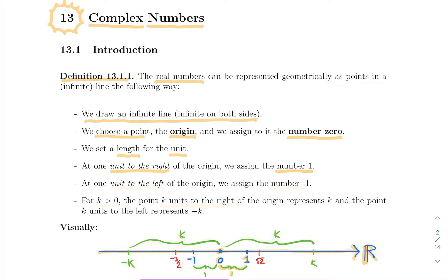One unit long corresponds to the number one. If you go one unit to the left, you get to the number minus one. In general, if you have a strictly positive number k and move k units to the right, you get the point representing k; and if you move k units to the left, you get the point corresponding to minus k. So for each real number, we can assign a unique point on the real line, and vice versa — there's a correspondence between points on this infinite line and the real numbers.